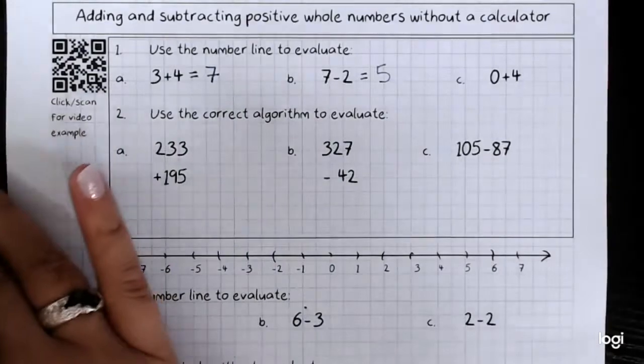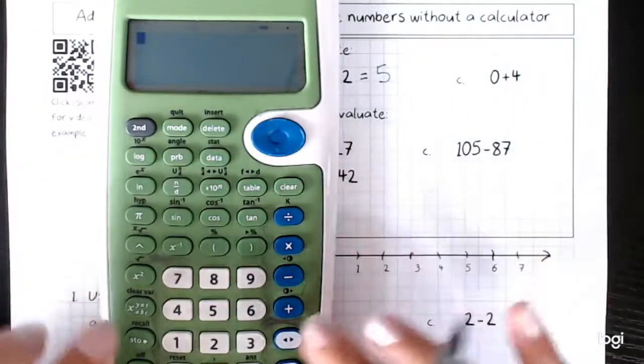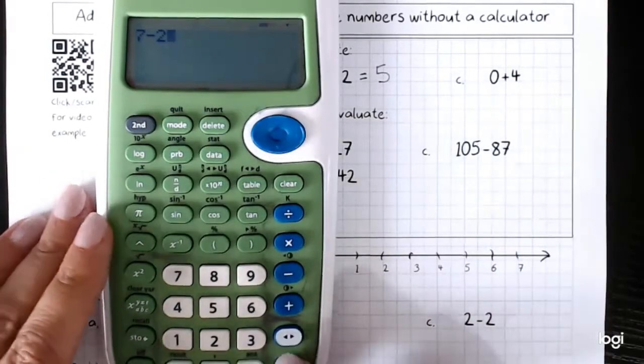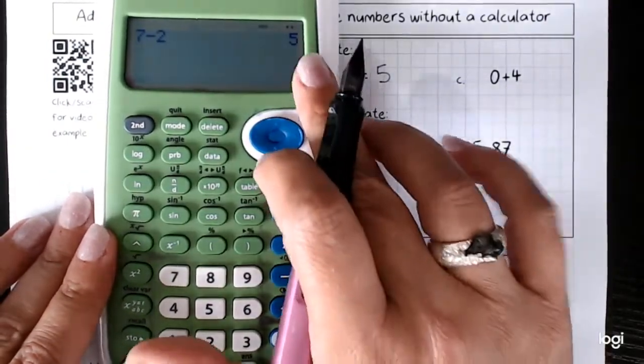Obviously if we were feeling nervous, we could check with our calculator. 7 take away 2 equals 5. There we go.